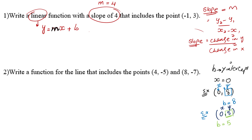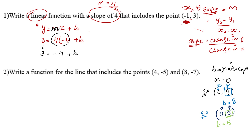What is x and what is y? This is x and this is our y. Replace in the equation: in place of y we write 3, in place of m we write 4, and in place of x we write negative 1, plus b as it is. Now solve: 3 equals 4 times negative 1, which gives us negative 4, plus b. To solve, bring the negative 4 to the other side by adding plus 4 to both sides. This cancels, so b equals 3 plus 4, which gives us 7.